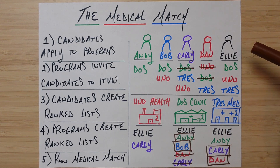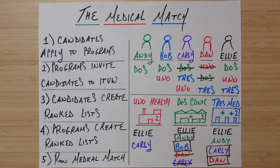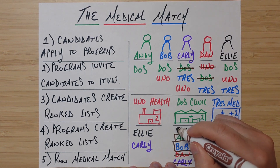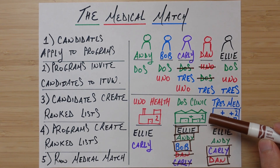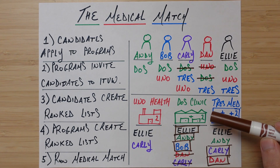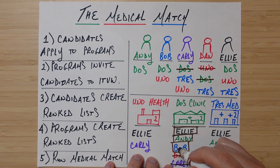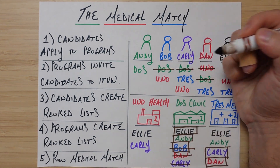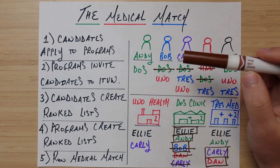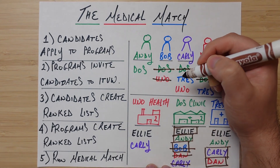Finally, we deal with Ellie. Ellie says she'd like to go to Dose Clinic. As it turns out, Ellie is actually the top choice for Dose Clinic, so we secure her a spot there. But because there are only two spots, somebody needs to be bumped out — the person least preferred by Dose Clinic. That's Bob, who was given a temporary match but is now no longer matched there. We go to Bob's next choice — Uno Health — but Bob is not listed there at all. So Bob will go nowhere, and the match is complete.